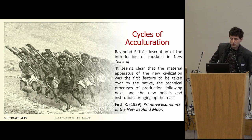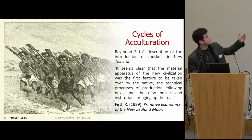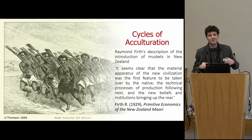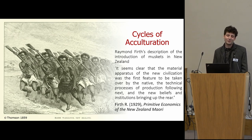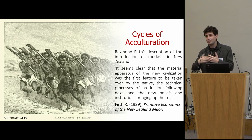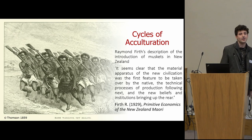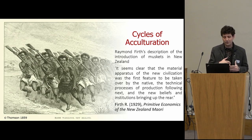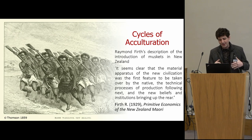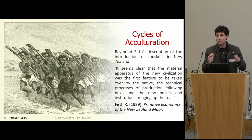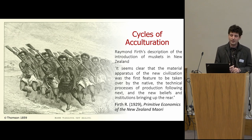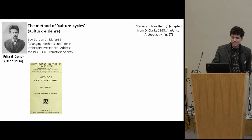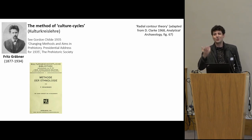Raymond Firth's idea of the cycle of articulation works like this: the Maori become familiar with muskets and immediately want them, so to get muskets they need to change their production — they need to produce goods they can exchange. In the last phase of that transition, their institutions, their religious institutions and so on, changed because the mode of production has changed. This was very important, and we tend to forget it. The other aspect coming from social anthropology is the method of culture cycles — but this is something different.